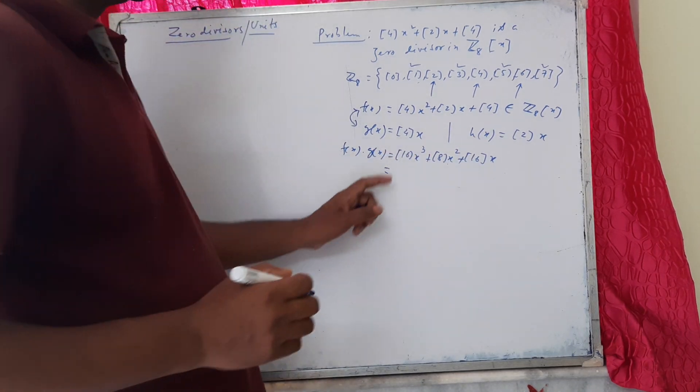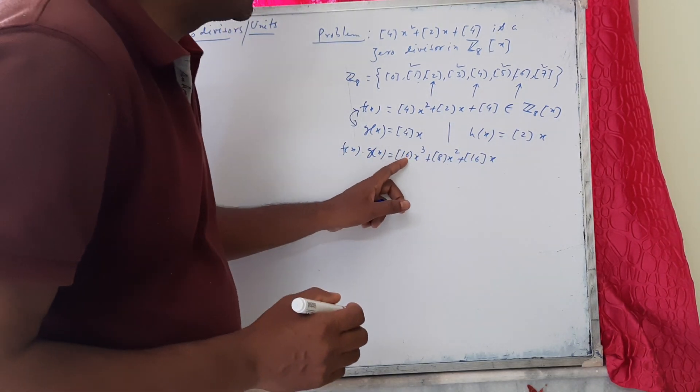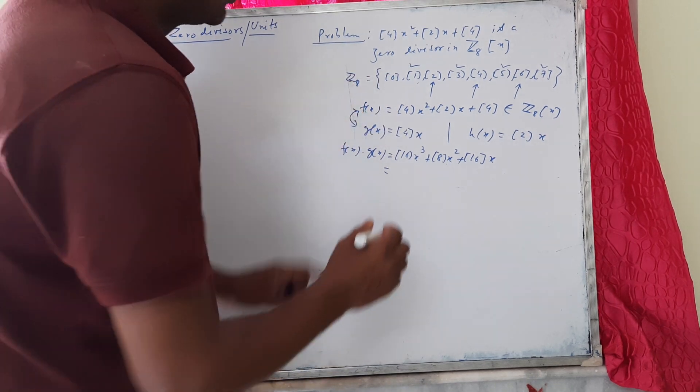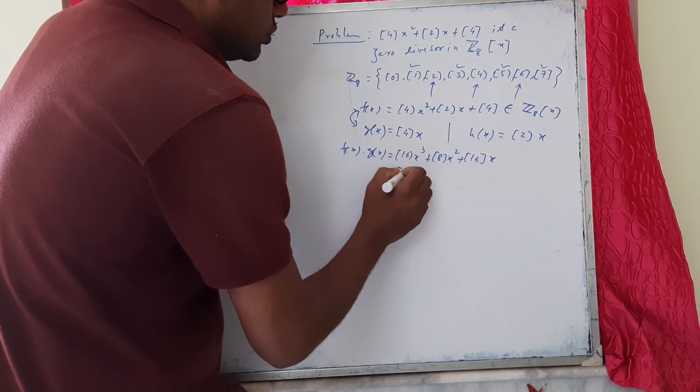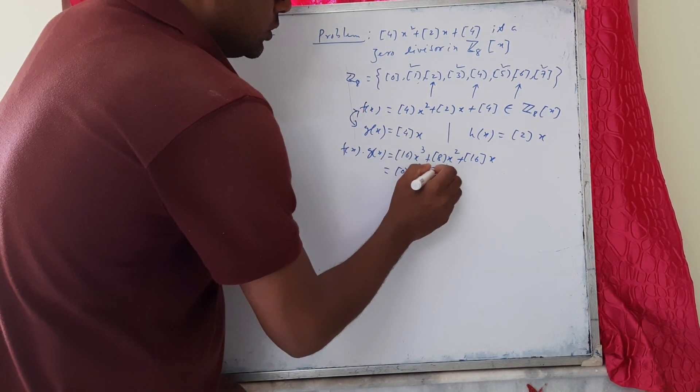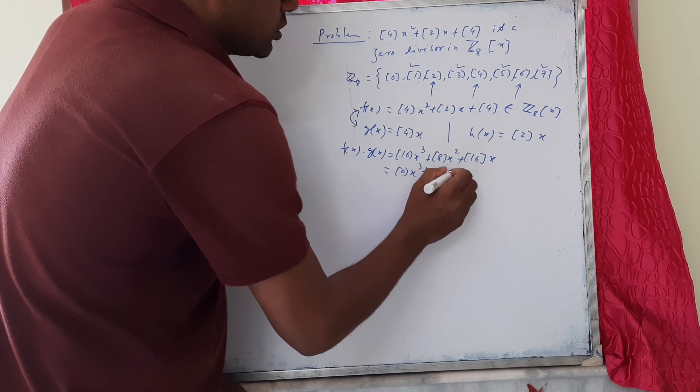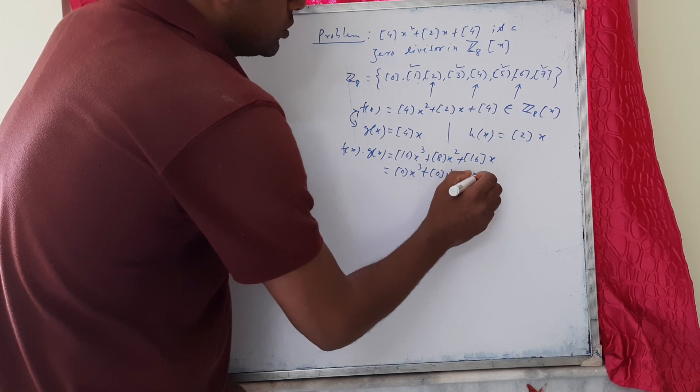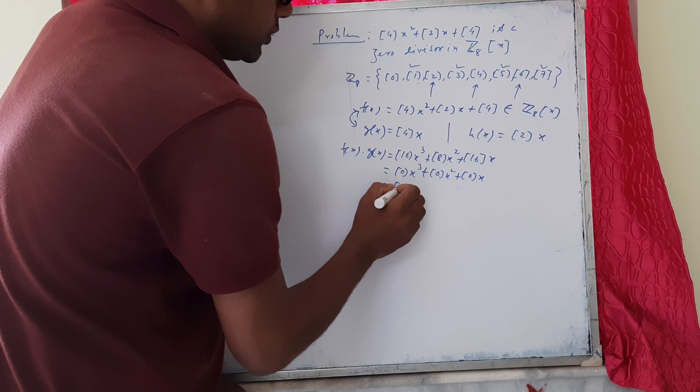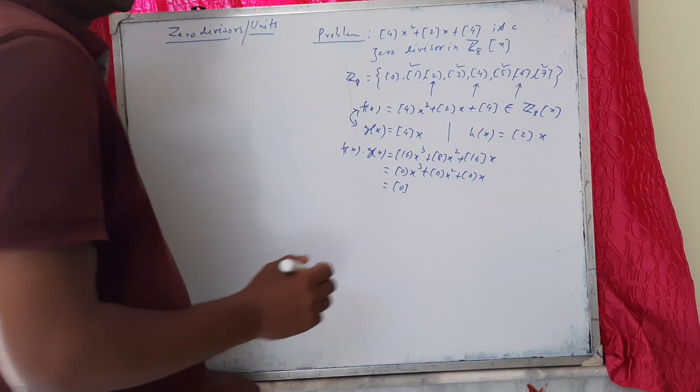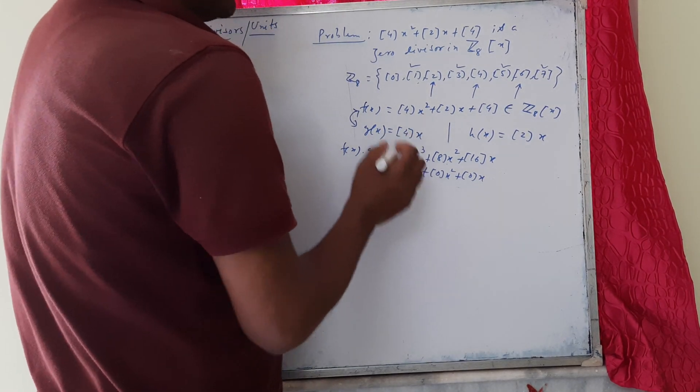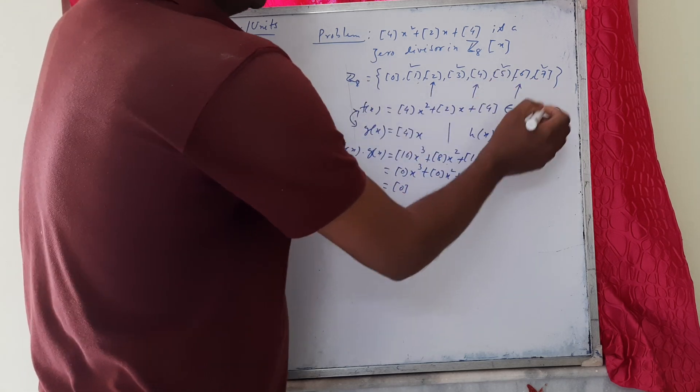Class 4 times class 4 is class 16. Since 16 is divisible by 8, we get class 0x³, also class 0x², and also class 0x. So we get the zero polynomial, the zero element in the ring Z₈[x].